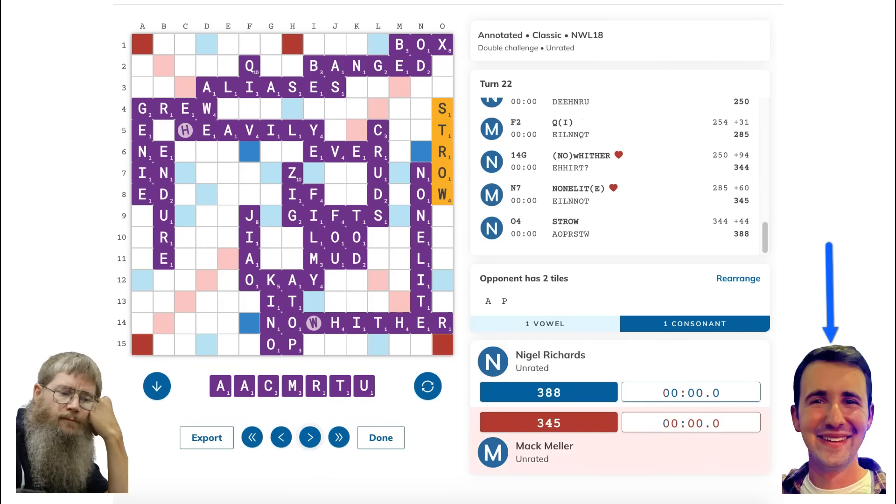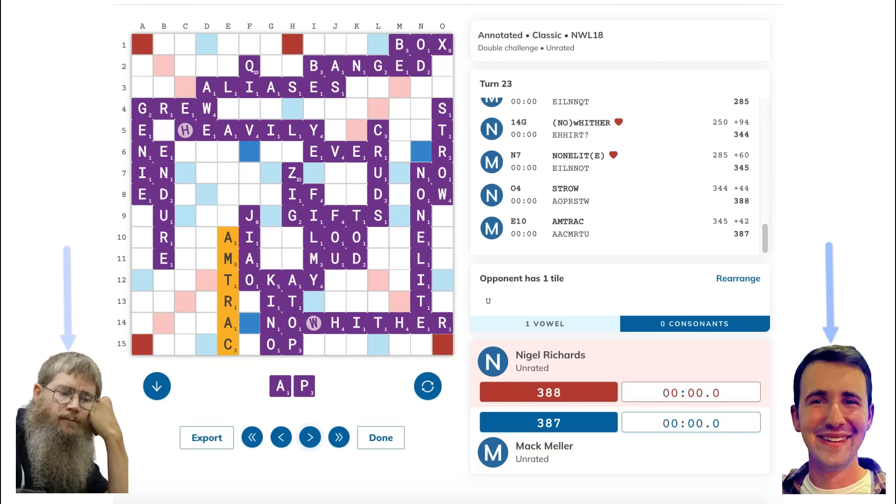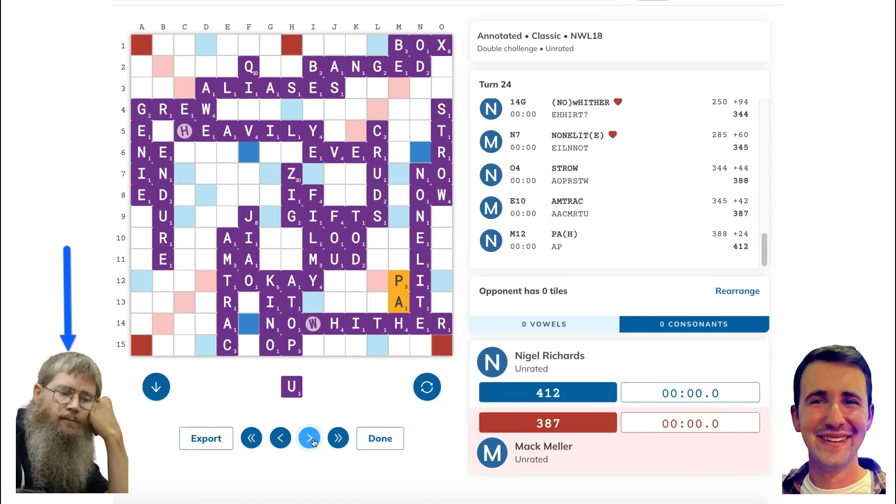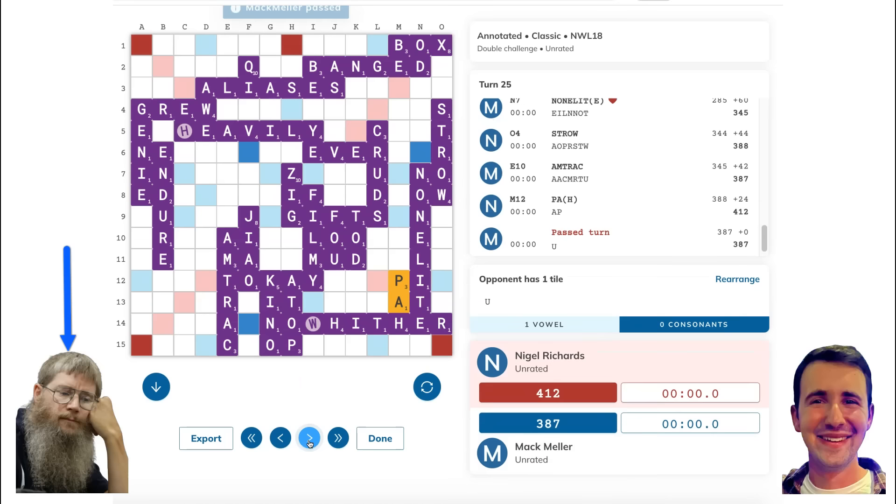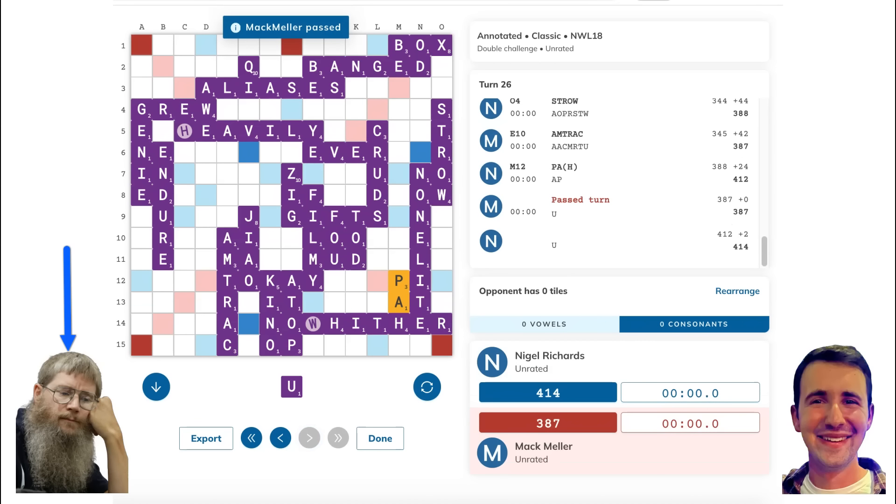I did find what I thought was a pretty impressive play here, though. I played my best play in this position. It was a little bit tricky to see. I found AMTRACK for 42 points, making three overlaps of AI, MA, and TOKAY down the E column, which for now brought me to within one point of Nigel, 387 to 388. But of course, with AP, Nigel went out. He found by far his best outplay of PA for 24 points, bringing Nigel's score to 412. And after getting two additional points from my unplayed U, the final score was Nigel 414, Mac 387.